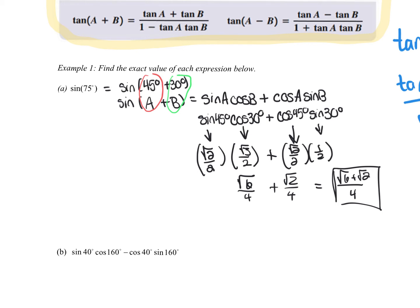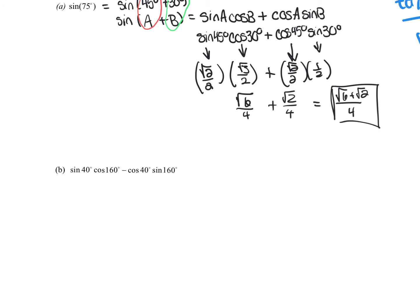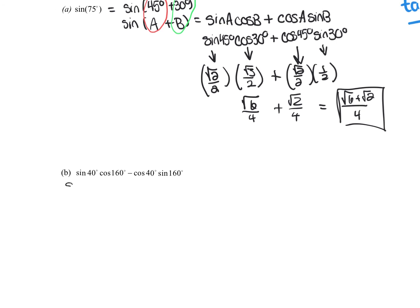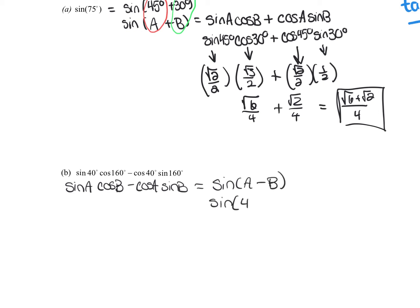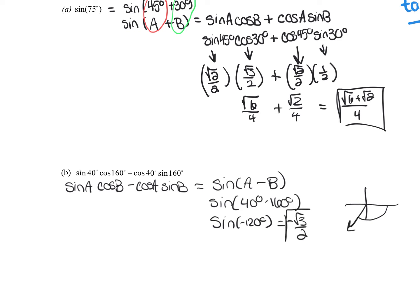For letter B, we're going to work backwards. It's already expanded out, so we have to recognize what it is first. This is sine A cosine B minus cosine A sine B, which we know came from sine of A minus B. So this is sine of 40 minus 160, which is sine of negative 120. Sine of negative 120 degrees is negative root 3 over 2. And there's your answer.